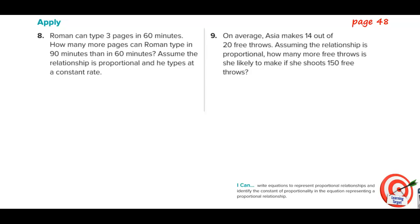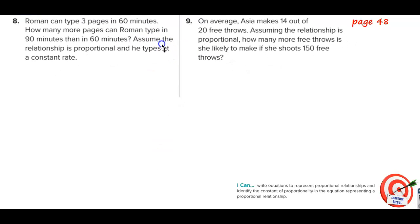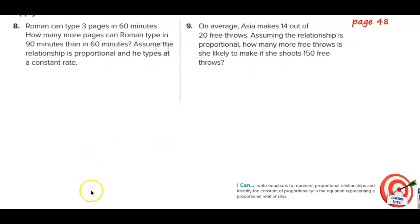Oh boy, these are those multi-step ones. This is going to be fun times here. Can she make it through without screwing these up totally? We'll see. Roman can type three pages in 60 minutes. So we're doing pages per minute. He can type three pages, see? What did I tell you? It's been a long day. Three pages in 60 minutes.